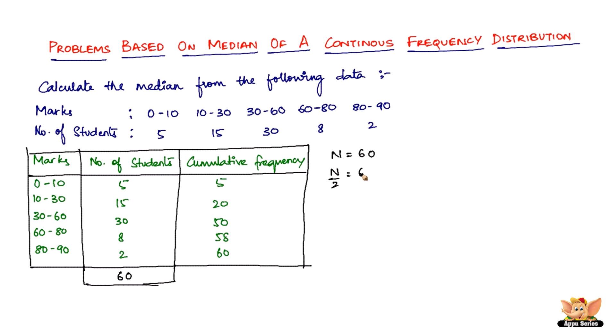So we need to find N by 2 which is equal to 60 by 2. That is 30. So we need to find a number in the cumulative frequency that is greater than 30. So that is 50 and the corresponding class to 50 is 30 to 60.